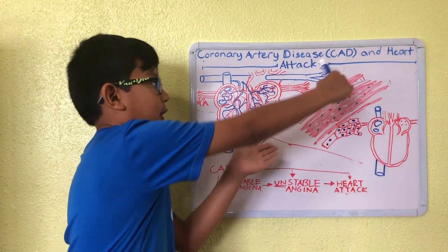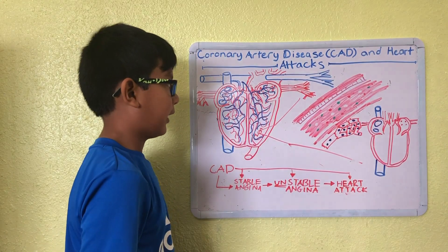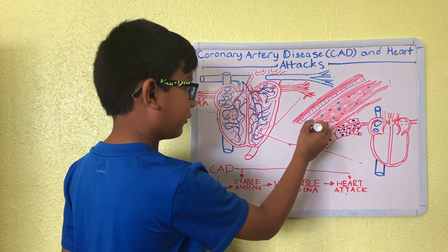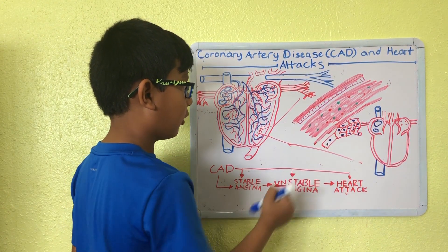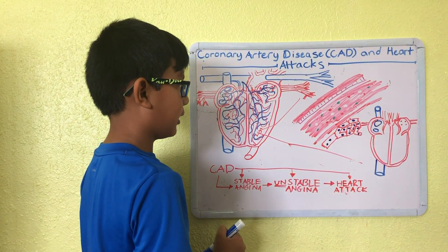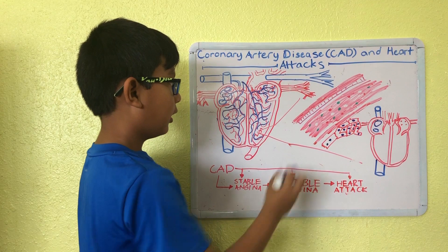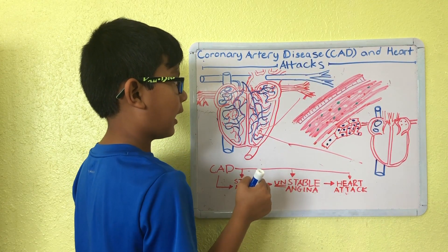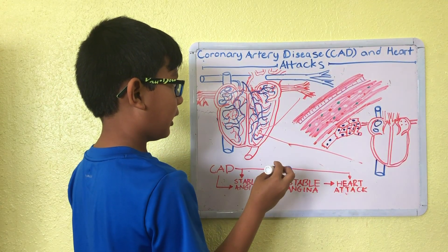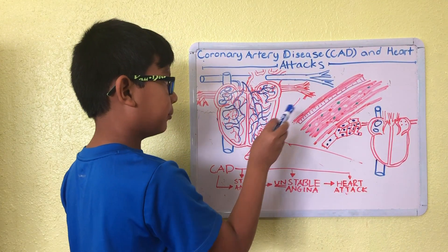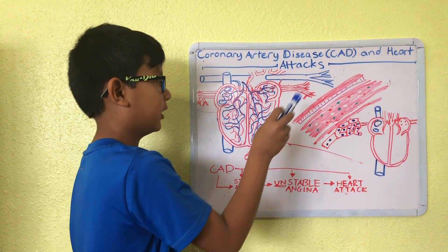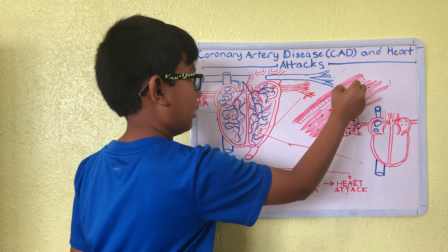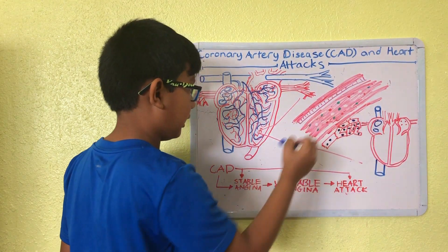Let's zoom in on one of these coronary arteries. Here you can see a blood vessel. We have cholesterol, as I've drawn in green, red blood cells in red, and white blood cells in the blank spots here.